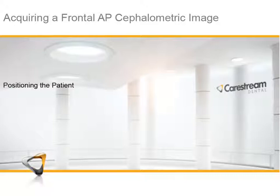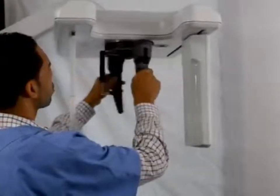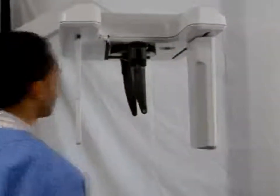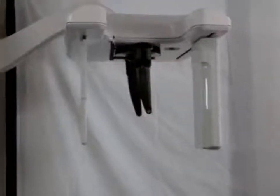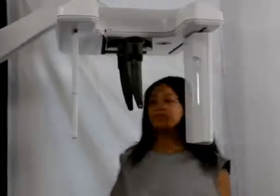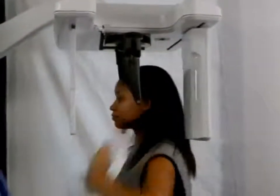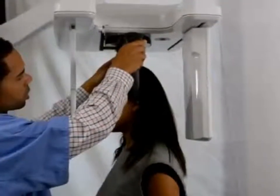Acquiring a Frontal Anterior to Posterior Cephalometric Image — Positioning the Patient: Position the head clamps by turning the clamps to the left and open the head clamps. Ask the patient to stand up straight in front of the cephalometric unit. For a frontal AP, the patient faces the generator; for a frontal PA, the patient faces the cephalometric sensor. After the machine is at the correct height, open the head clamps and instruct the patient to step into the machine. Slowly close the head clamps to stabilize the patient's head.